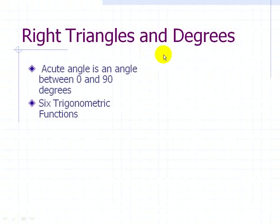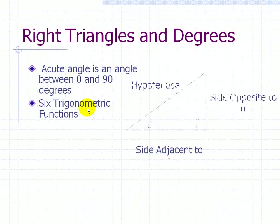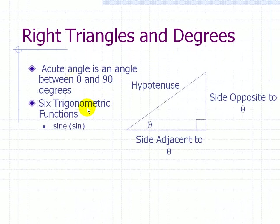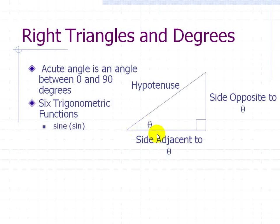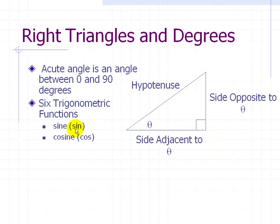Let's look at right triangles. An acute angle is an angle between 0 and 90 degrees. The three trigonometric functions are basically ratios of the sides. If you have an angle theta, the side opposite to theta is this side here, the side adjacent to theta is this side here, and the hypotenuse is opposite the 90-degree angle. So we have the sine, cosine, and tangent of theta.